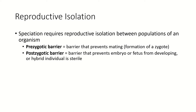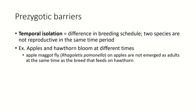Horses and donkeys have a postzygotic barrier. The mule can grow up into a perfectly healthy individual, but it is sterile. So there is a postzygotic barrier between horses and donkeys. We're not going to really talk about postzygotic barriers — they're a little more complicated than this class — but we have lots of prezygotic barriers to discuss.